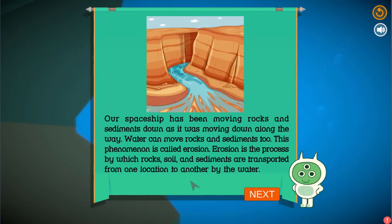Our spaceship has been moving rocks and sediments down as it was moving down along the way. Water can move rocks and sediments too. This phenomenon is called erosion. Erosion is the process by which rocks, soil, and sediments are transported from one location to another by the water.